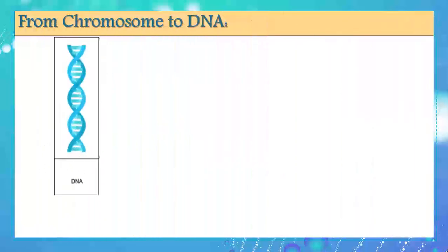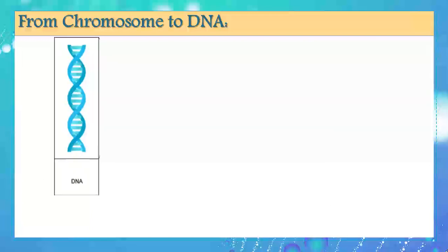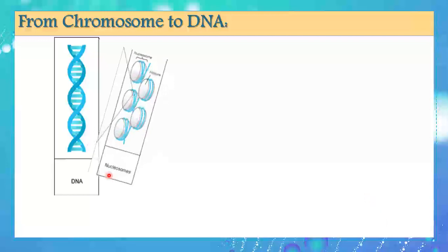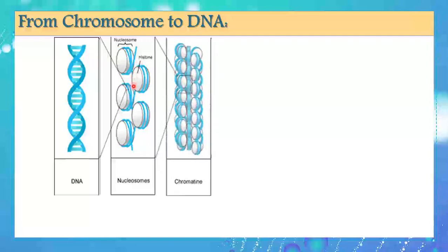So how do two meters of DNA become a shorter chromosome? Starting from a DNA molecule, this long thread of DNA is wrapped or coiled around a protein called histone, forming what we call a nucleosome. A nucleosome is a histone protein plus a DNA molecule coiled around those proteins. In the next step, those nucleosomes are packed one on top of the other, forming what we call chromatin.